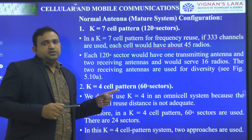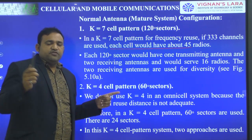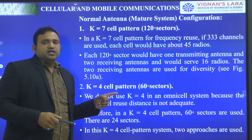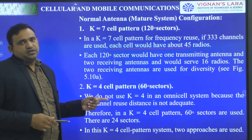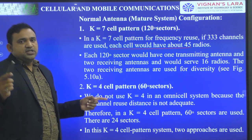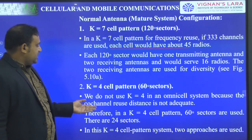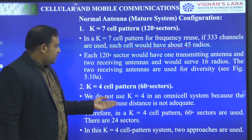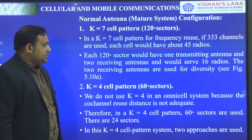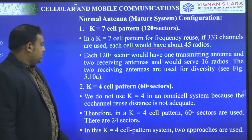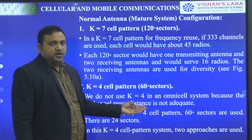In the design of a directional antenna or omnidirectional antenna, K equal to 4 system is not sufficient because the C/I value is less than 18 dB. Therefore, we are not going to use K equal to 4 in an omnidirectional cell system because the co-channel reuse distance is not adequate.